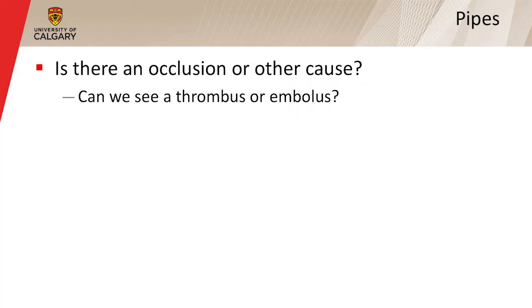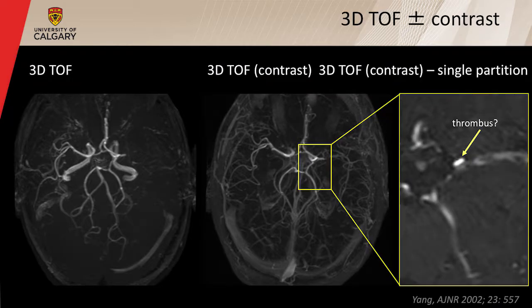Moving on to the Pipes — the questions here are: is there an occlusion or another cause of the stroke, and ideally can we see an embolus or thrombus? We've done a number of studies using techniques such as time-of-flight, sometimes in combination with contrast-enhanced time-of-flight. These are very powerful for identifying occlusions in the vessel. On the individual partitions of contrast-enhanced time-of-flight, you may actually be able to see some of the thrombus — giving the neurologist a good sense of what they're trying to treat.